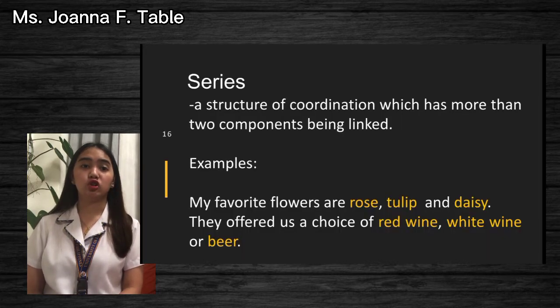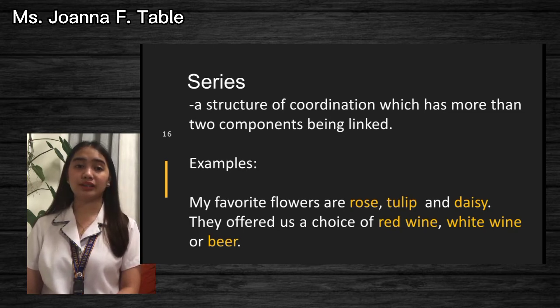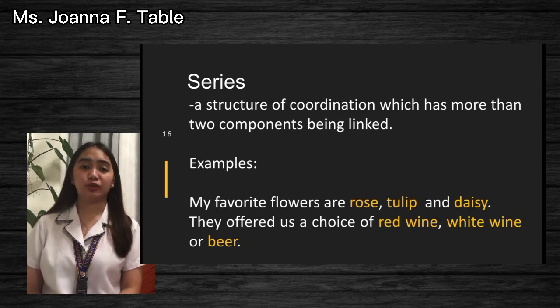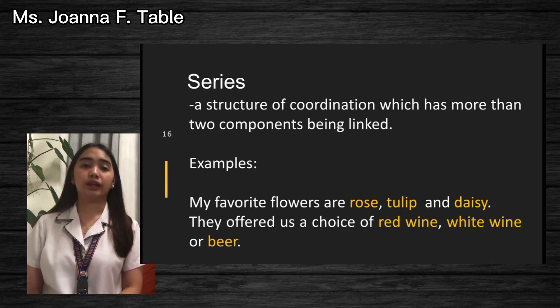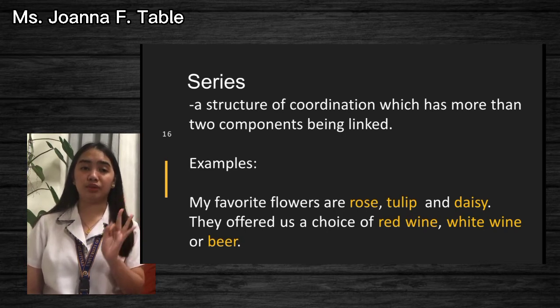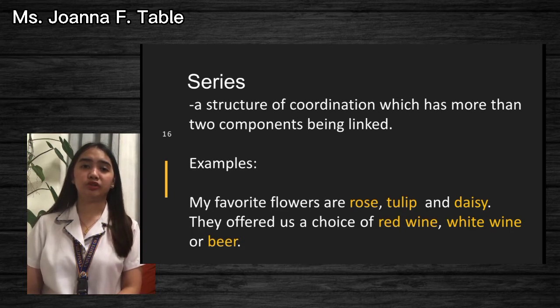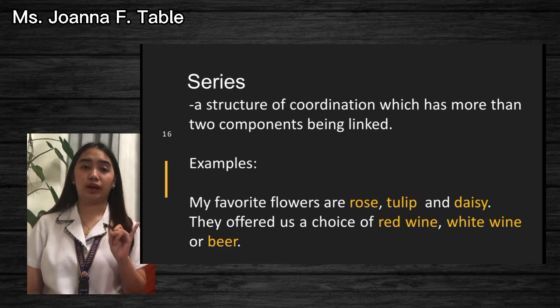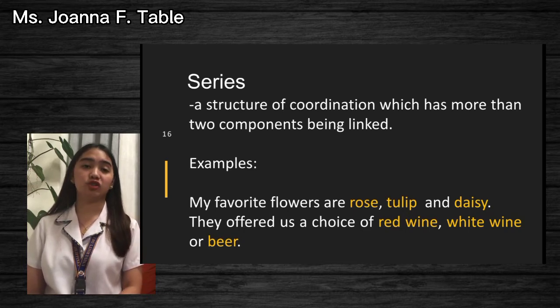There is also a series in the structure of coordination — a series which has more than two components being linked. Examples: 'My favorite flowers are rose, tulip, and daisy.' Second example: 'They offered us a choice of red wine, white wine, or beer.' In the first example, rose, tulip, and daisy are considered conjuncts, while in the second example, red wine, white wine, and beer are considered conjuncts.